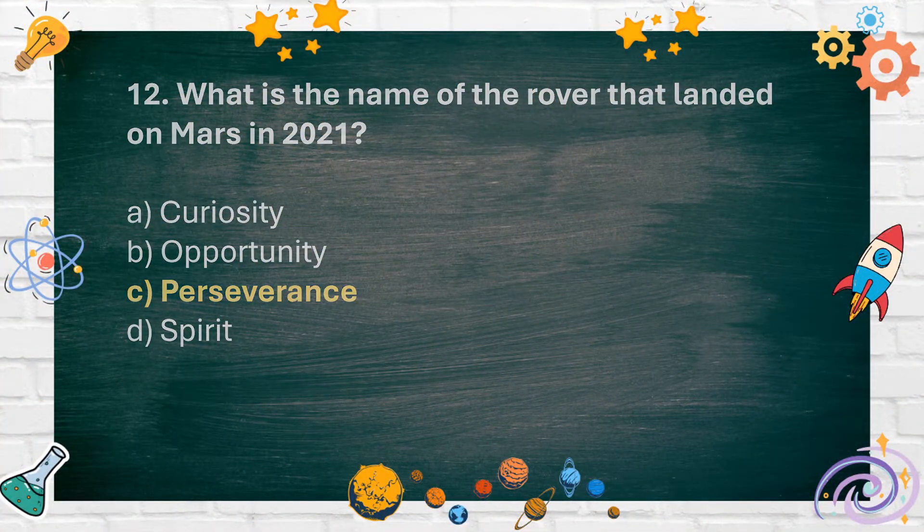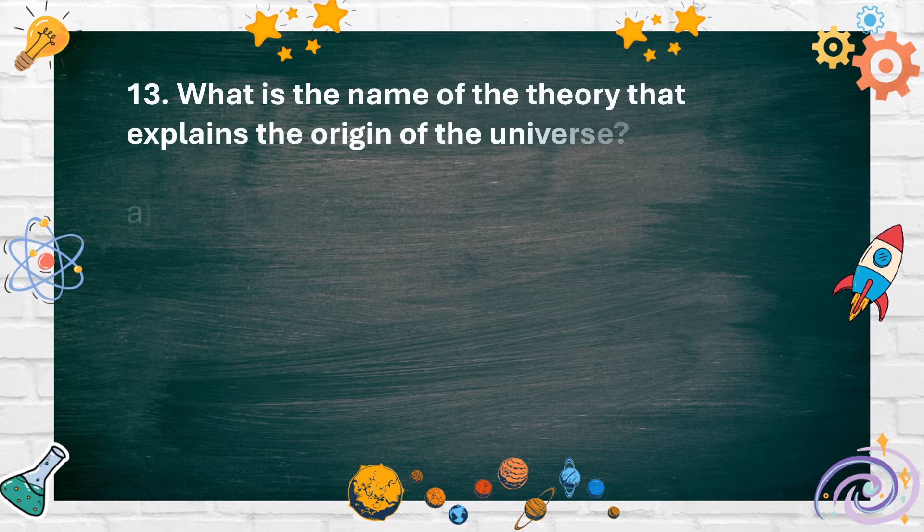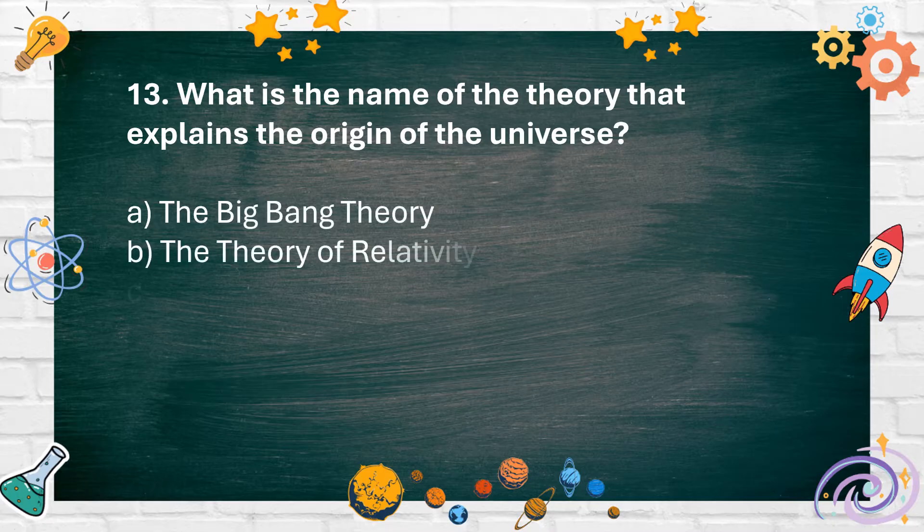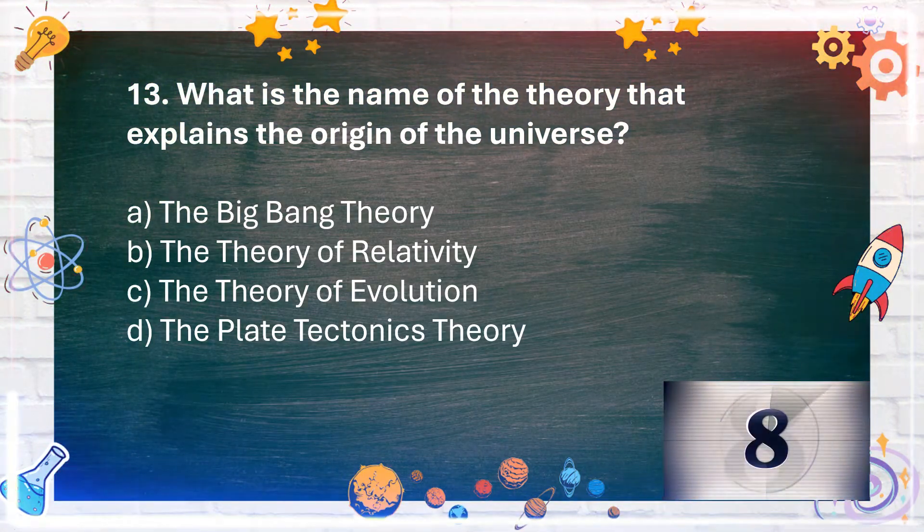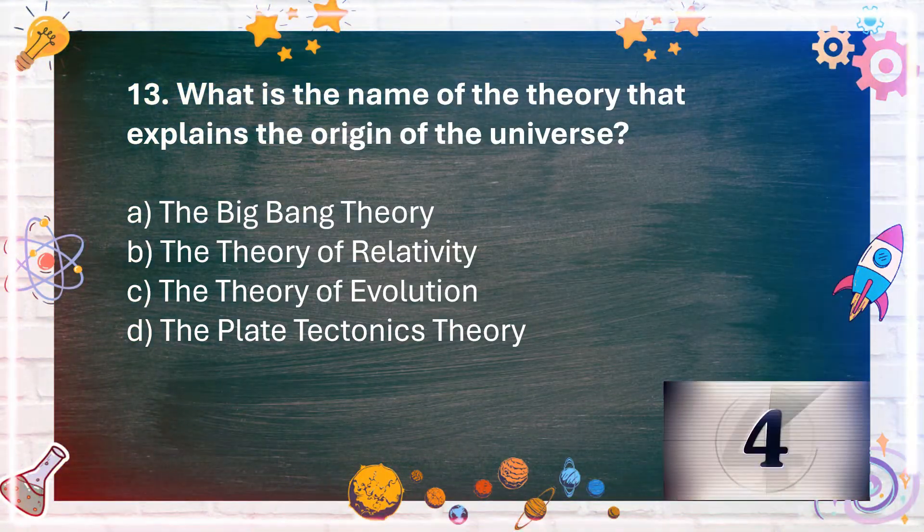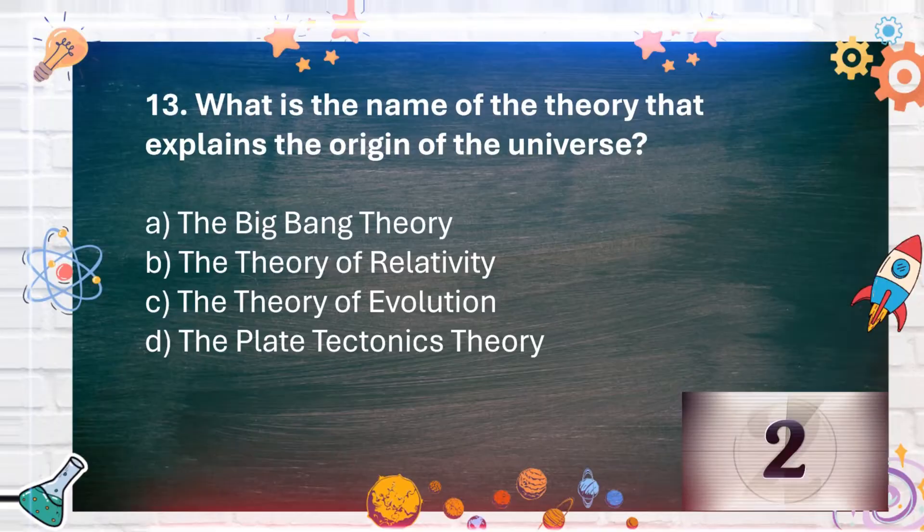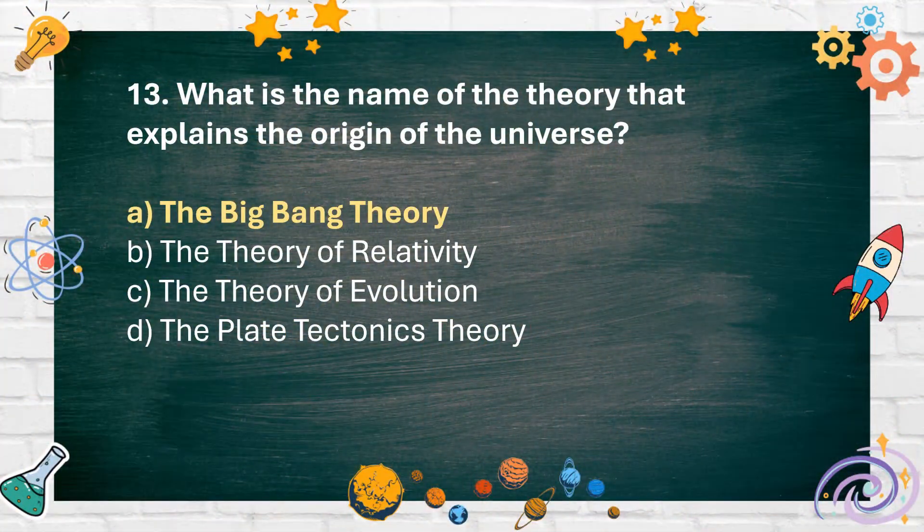Number 13: What is the name of the theory that explains the origin of the universe? A. The Big Bang Theory, B. The Theory of Relativity, C. The Theory of Evolution, D. The Plate Tectonics Theory. The answer is A. The Big Bang Theory.